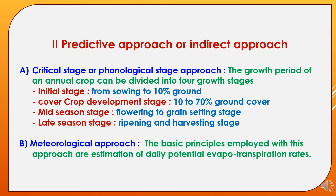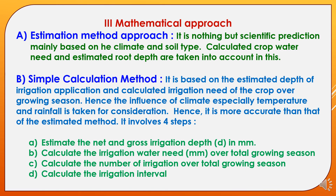The third theoretical approach is the mathematical approach, with two types. First is the estimation method approach — a scientific prediction based mainly on climate and soil type, using calculated crop water need and estimated root depth. Second is the simple calculation method, based on the estimated depth of irrigation application and calculated irrigation need over the growing season, taking into account climate (especially temperature and rainfall), making it more accurate than the estimation method. It involves four steps: estimate net and gross irrigation depth in millimeters; calculate irrigation water need over the total growing season; calculate the number of irrigations over the total growing season; and calculate the irrigation interval.